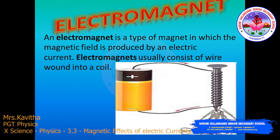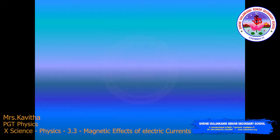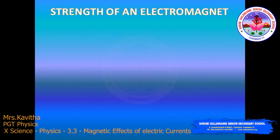The electromagnets usually consist of wire wound into a coil, which you are seeing in the diagram.